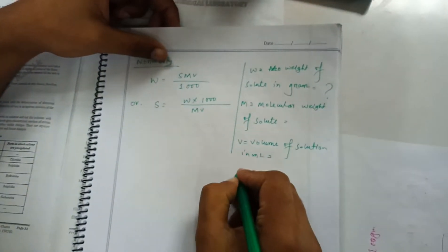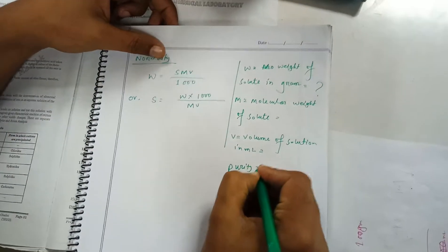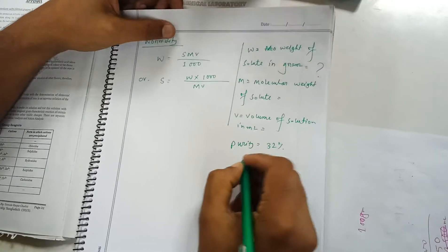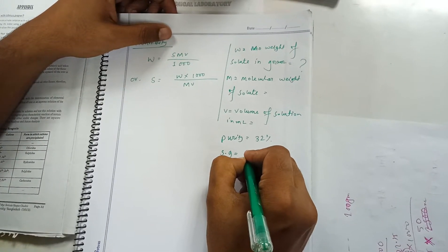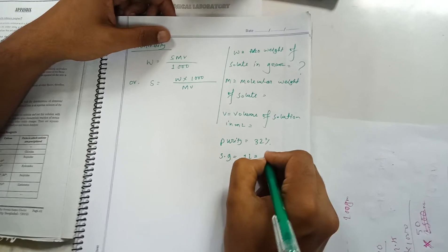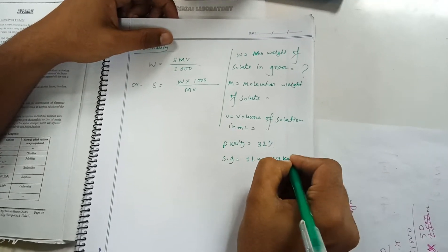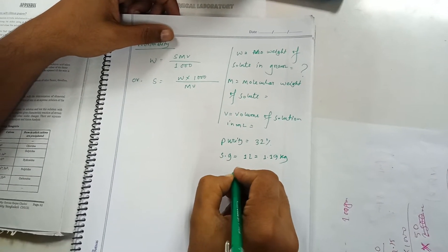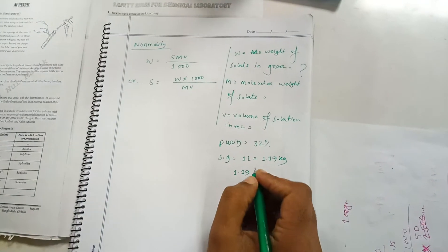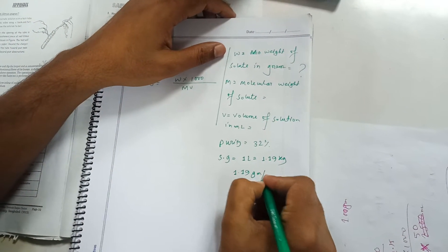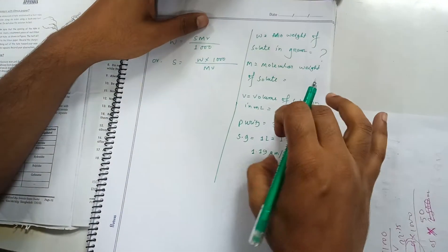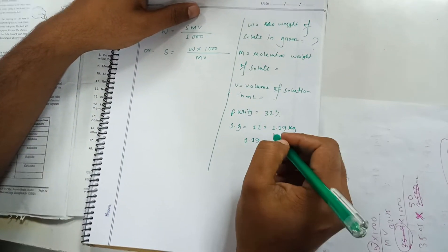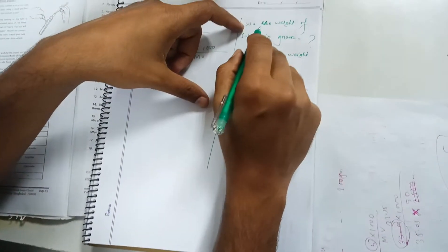The purity is 32% and specific gravity or density is 1 liter equals 1.19 kg, that means 1.19 grams per ml. From these two pieces of information, we can find out the W.